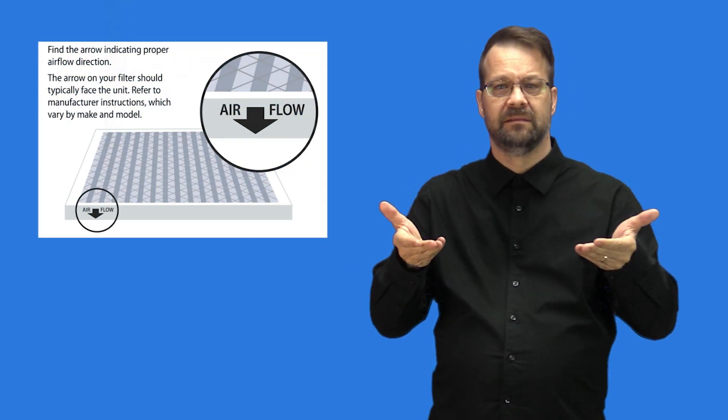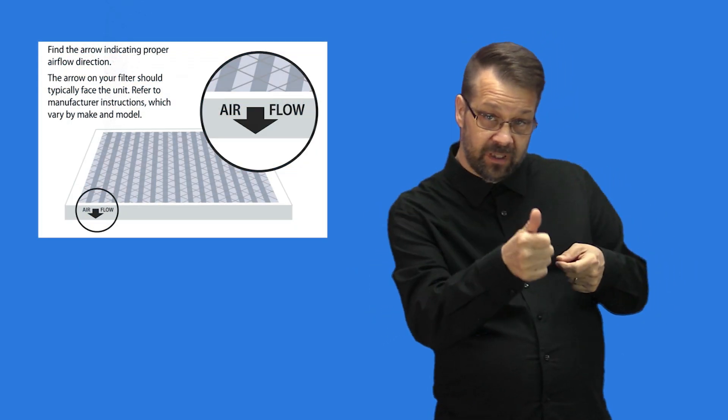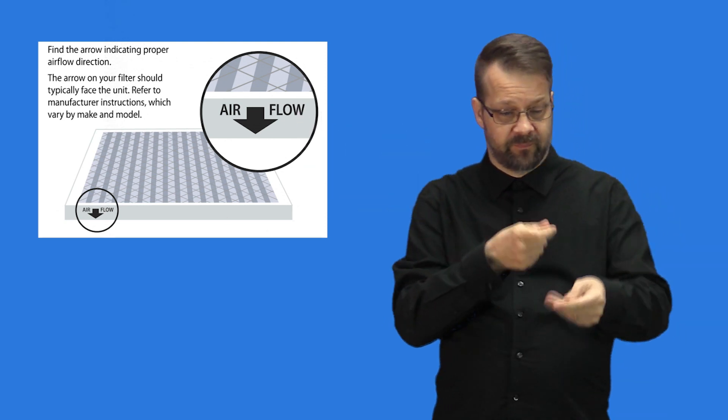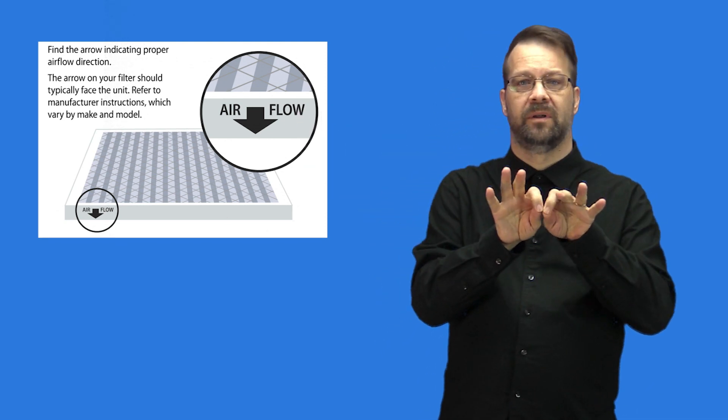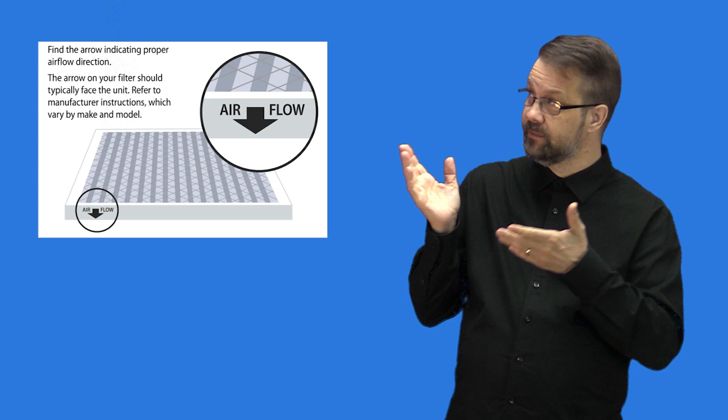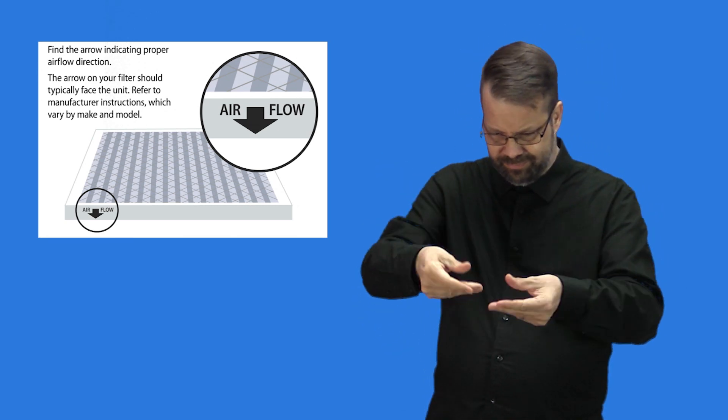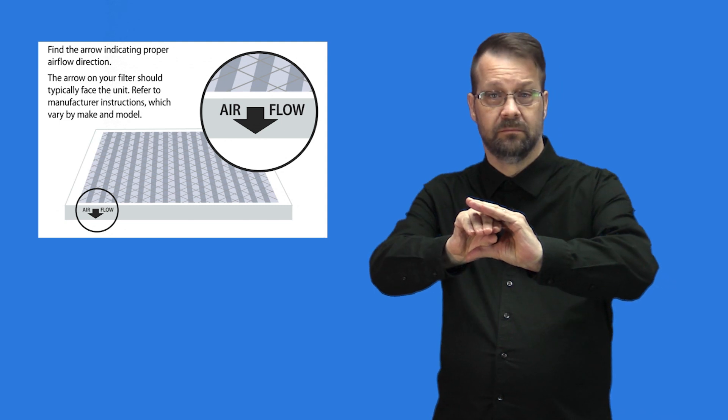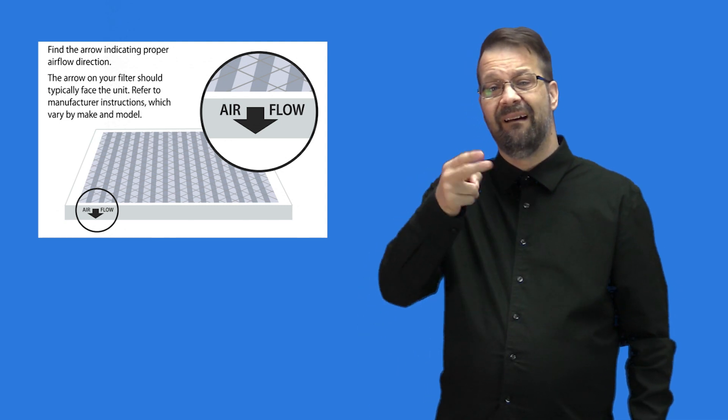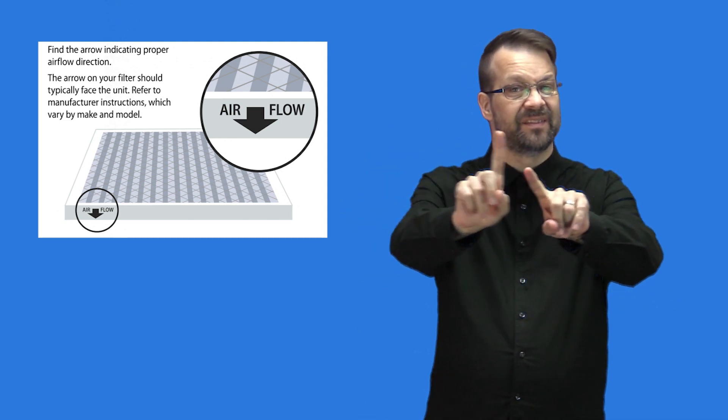Make sure the filter is installed properly as shown here. First, find the arrow indicating proper airflow direction. The arrow on your filter should typically face the unit. Refer to manufacturer instructions for your HVAC system, which vary by make and model.